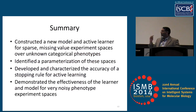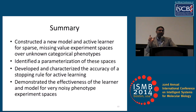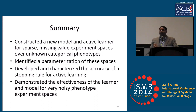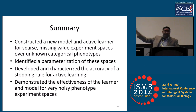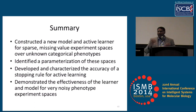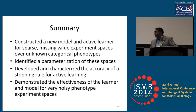To summarize: we've constructed a model capable of learning sparse missing-value problems where the readouts are categorical or high-dimensional. In the high-dimensional case, we reduce this to a categorical phenotype problem by clustering. We've identified a parameterization of these sorts of problems which lets us measure their difficulty. And we've developed and characterized the accuracy of a stopping rule so we know when to stop — which is crucial. It's not enough to just run an active learner and hope for good accuracy; we have a way of estimating the accuracy of the model and our confidence in that prediction.